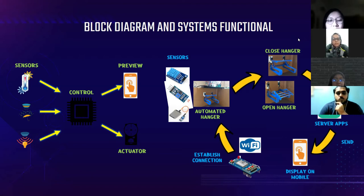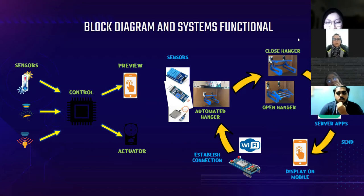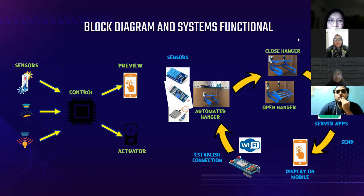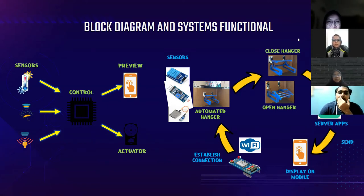There are two outputs in the block diagram: the display block and the actuator block. The display block consists of a mobile phone screen — the display panel is used to show electronic information such as text and images. The actuator block consists of a servo motor, which acts as the motion controller. I will pass to Mariana for the system function explanation.